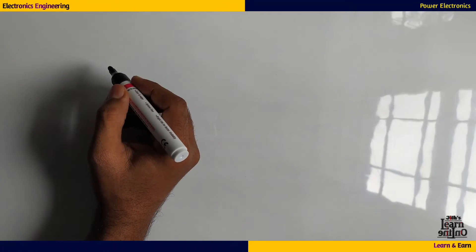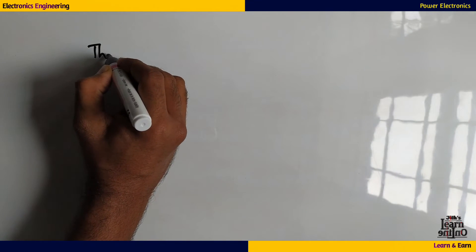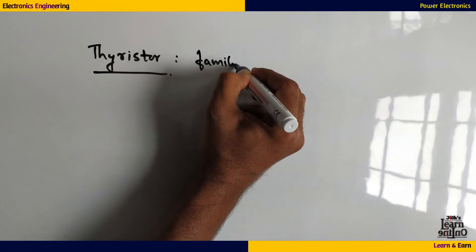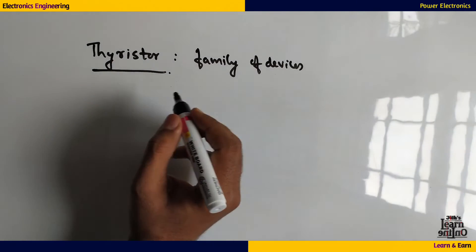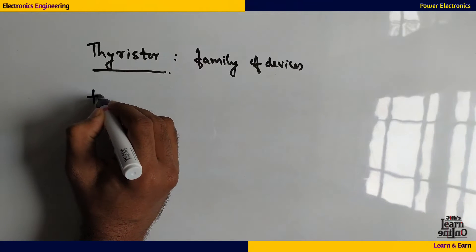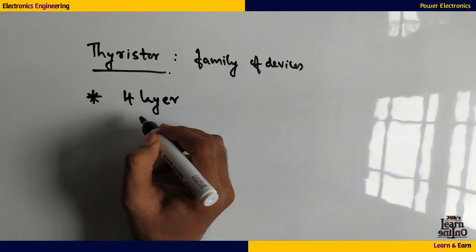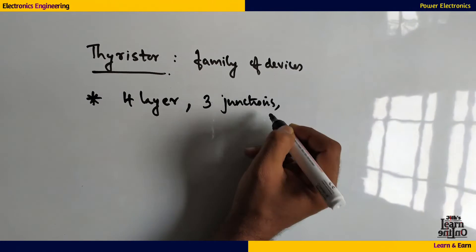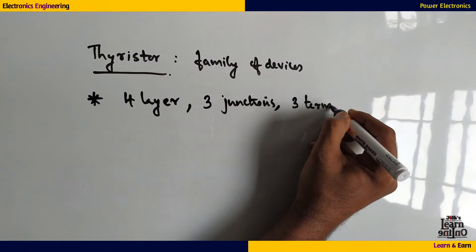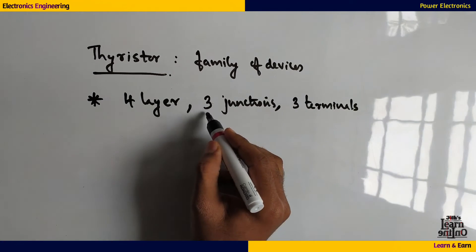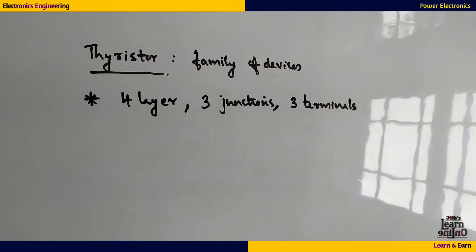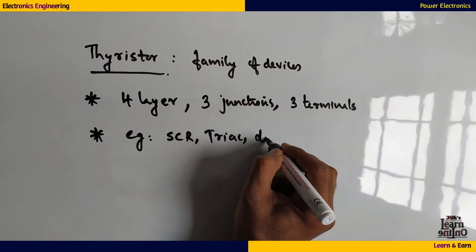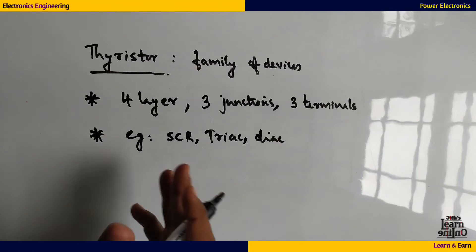SCR stands for Silicon Controlled Rectifier and is a thyristor. Thyristor is not a single device but a family of devices. SCR is the most prominent member of the thyristor family. All thyristors have a 4-layer structure, 3 junctions, and 3 terminals. Other members of the thyristor family include TRIAC and DIAC.